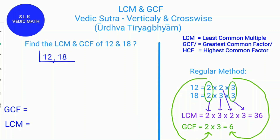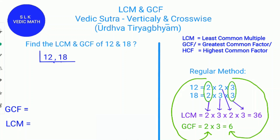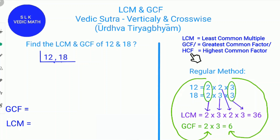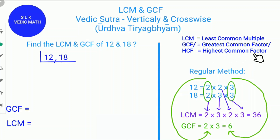For GCF: factors are integers you multiply together to get another integer. The largest factor that both numbers share is called the greatest common factor. GCF is also called HCF — GCF means greatest common factor, HCF means highest common factor.